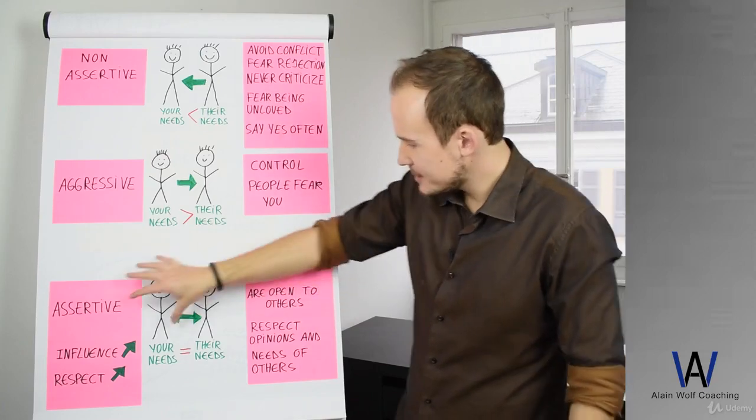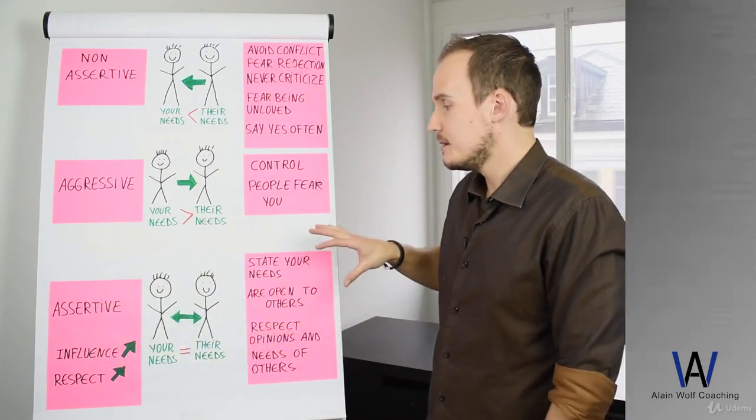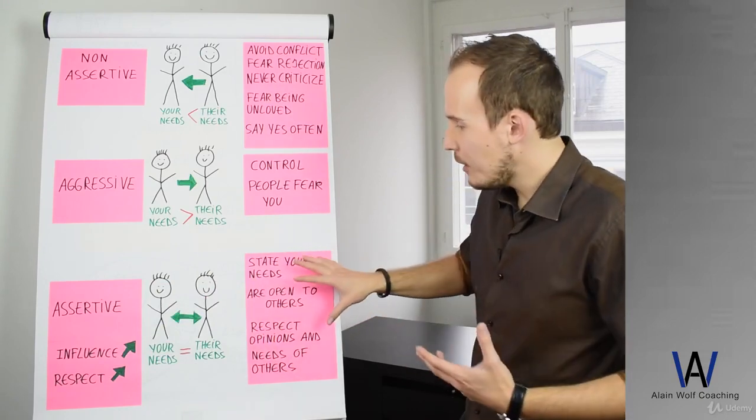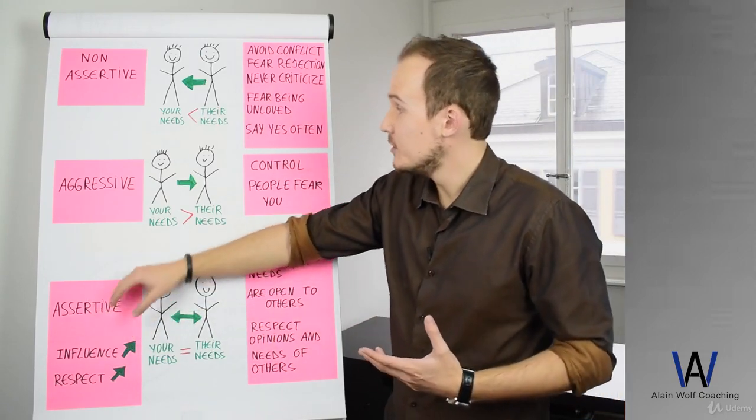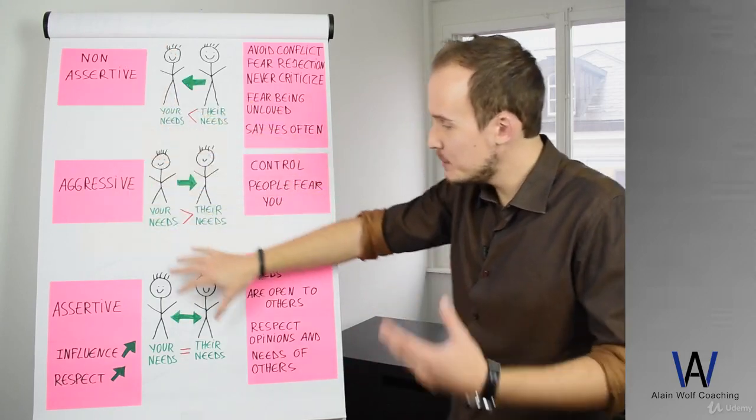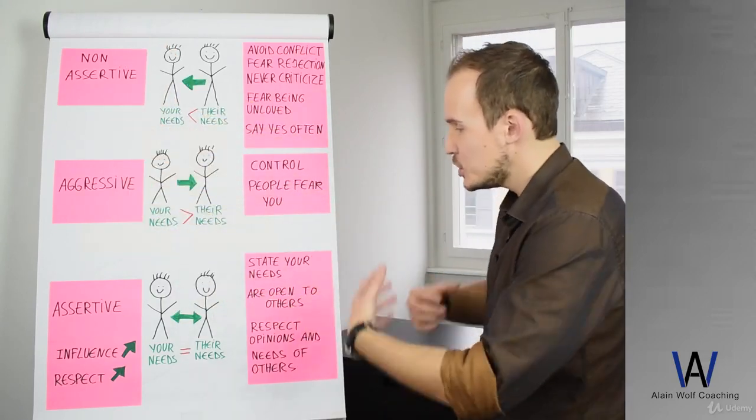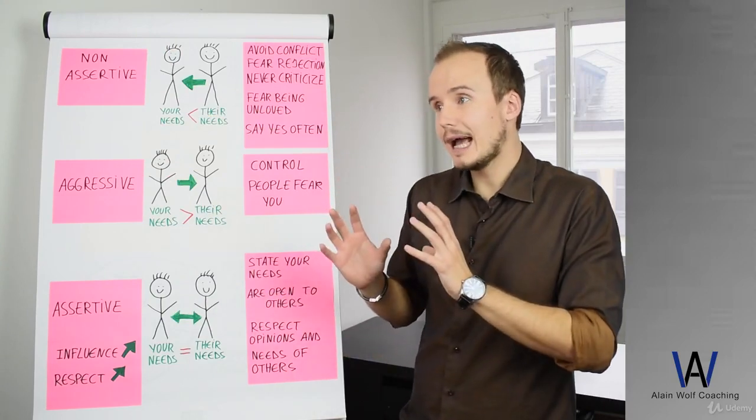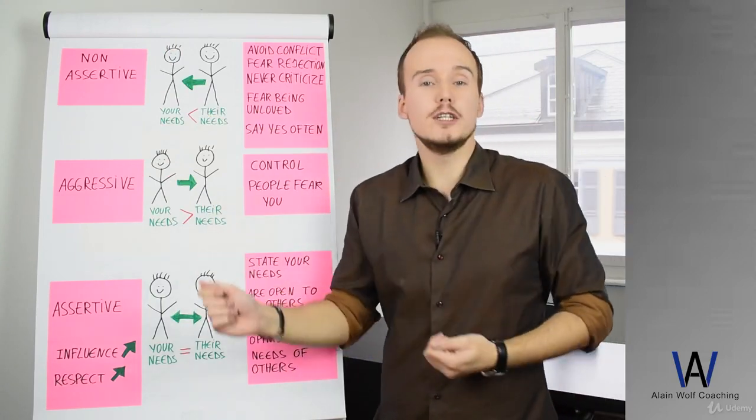So we can see here that the best communication style is being assertive. And this course is based on how can you become assertive, not aggressive and not passive. How can you become more assertive, state what you want, your needs and respect other people. But you will also have techniques so that people will do what you want.